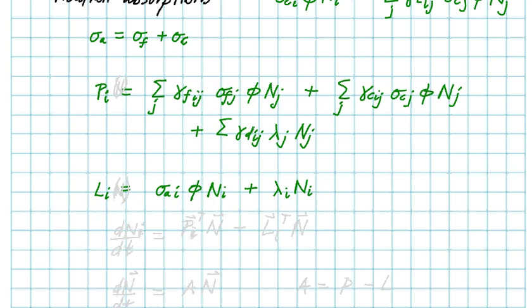So we've defined the production and the loss, so we can write dN_i/dt equals P_i N minus L_i N. I should write this as P_i N and L_i N, and then we can write this is going to be a vector times a vector plus or minus a vector times a vector.